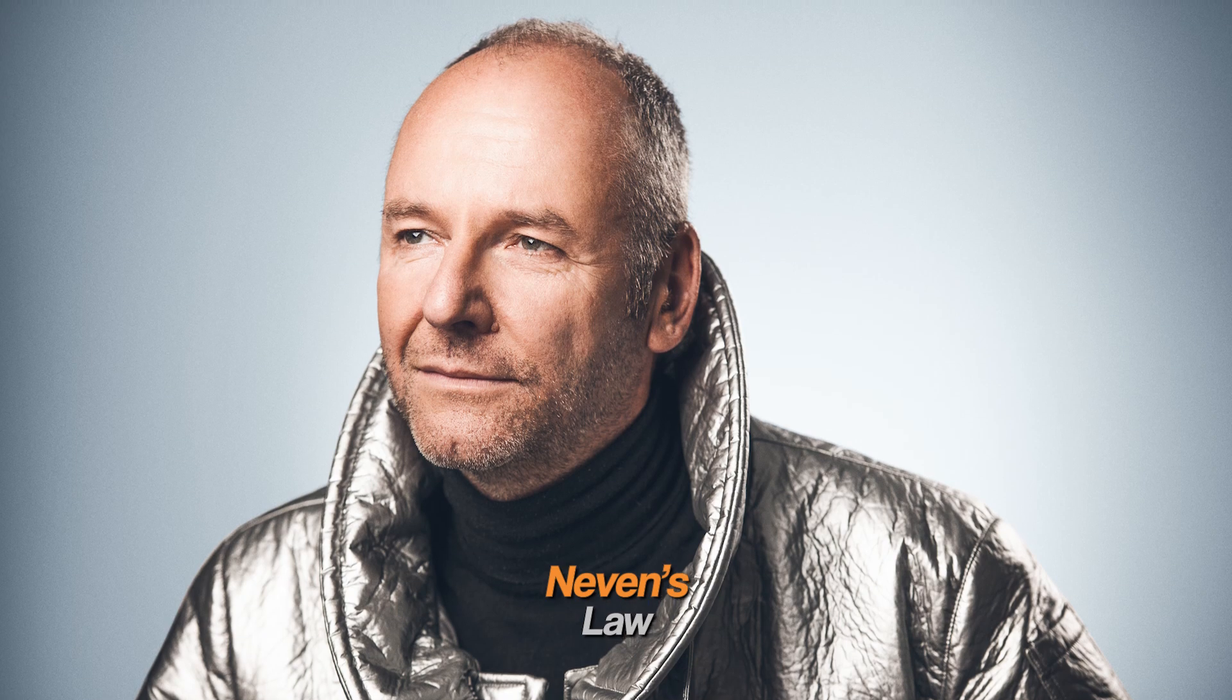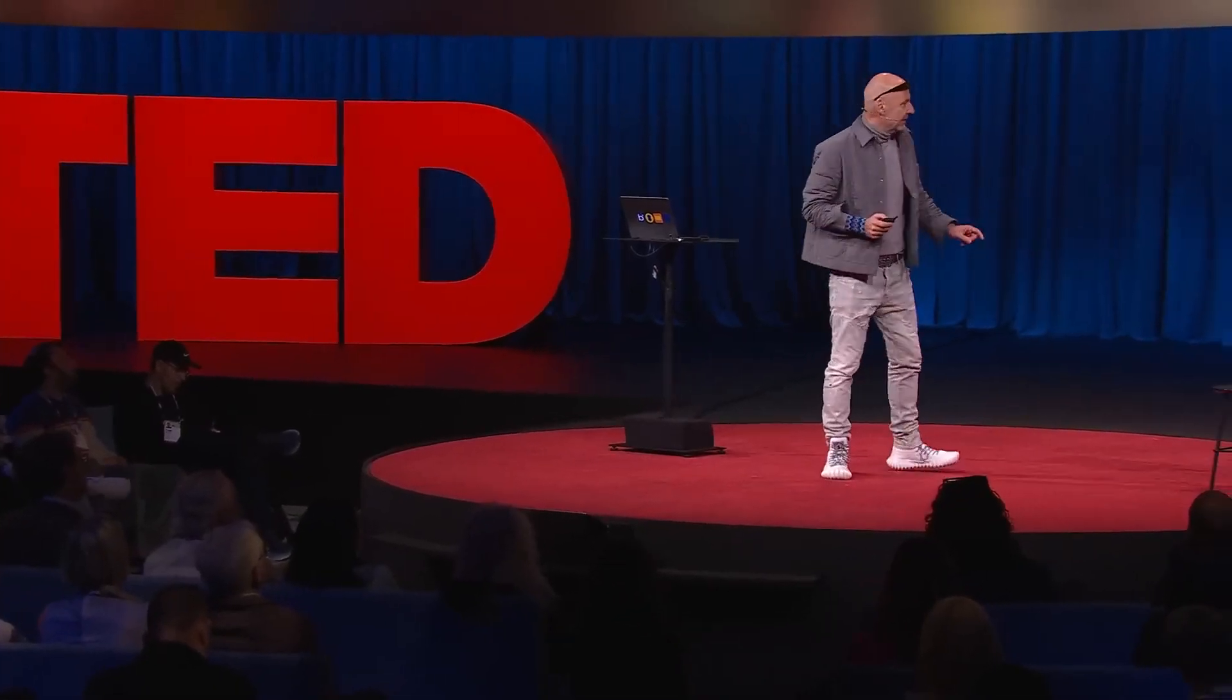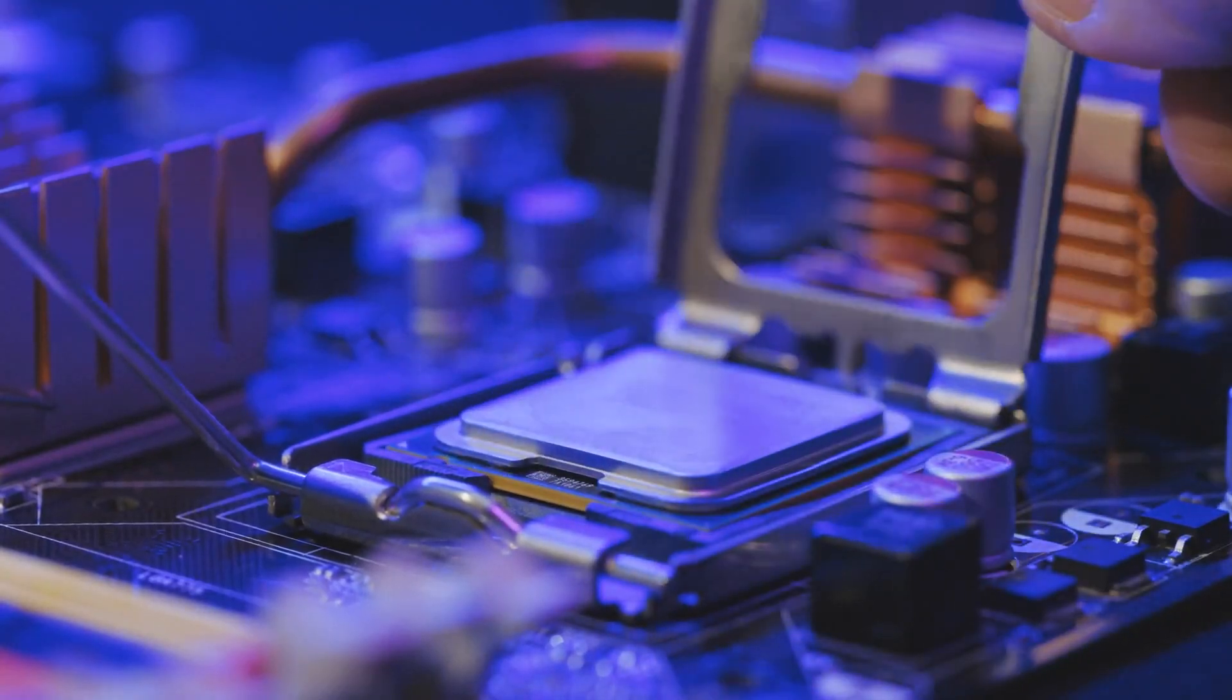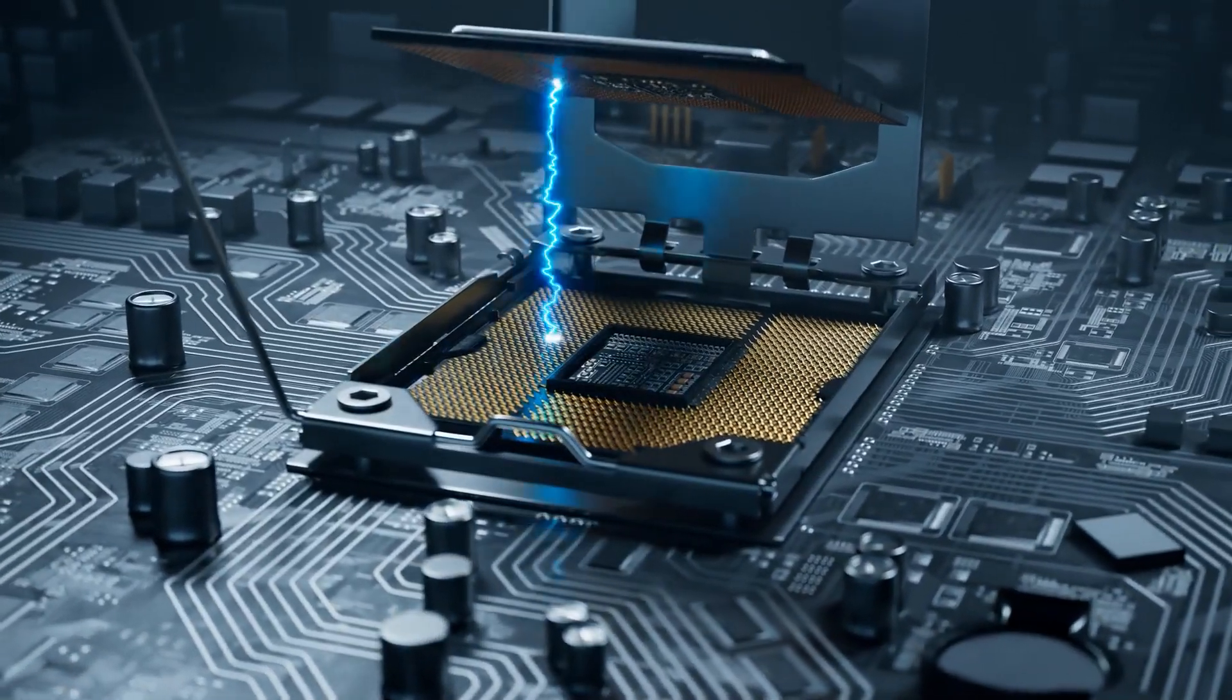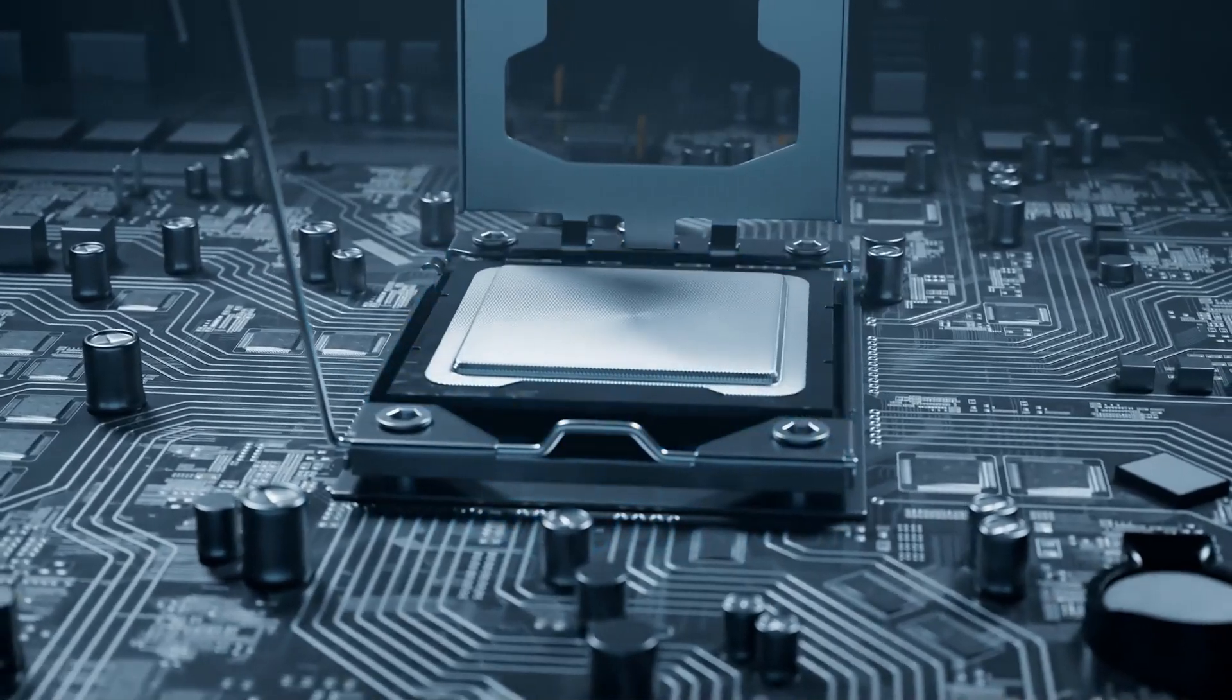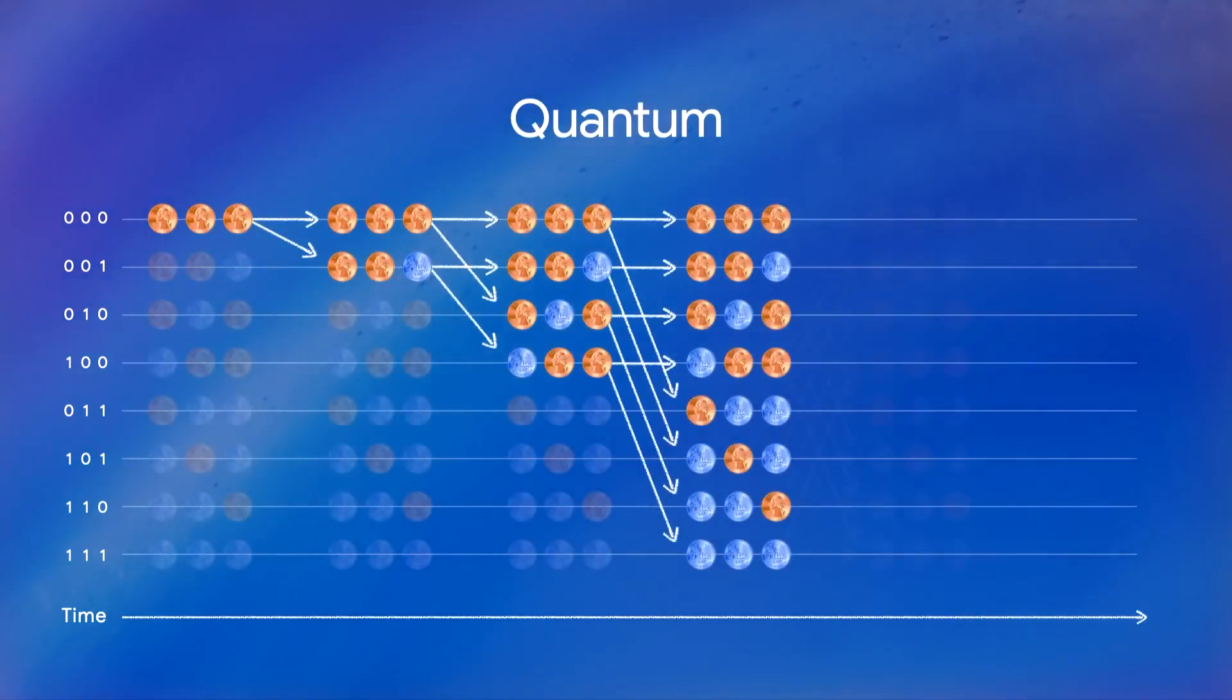Nevin's law is an observation in quantum computing that describes the accelerating pace at which quantum processes improve compared to classical computing systems. In other words, the computational power of quantum computers improves at a doubly exponential rate over time. Nevin's law explains why the Willow chip is exponentially better than the Sycamore chip invented just five years ago.